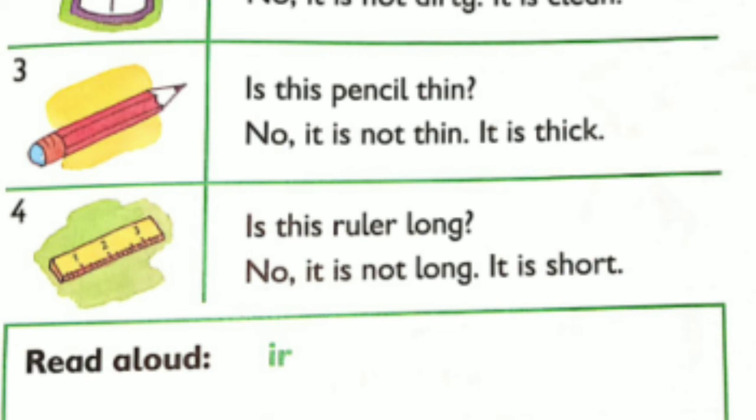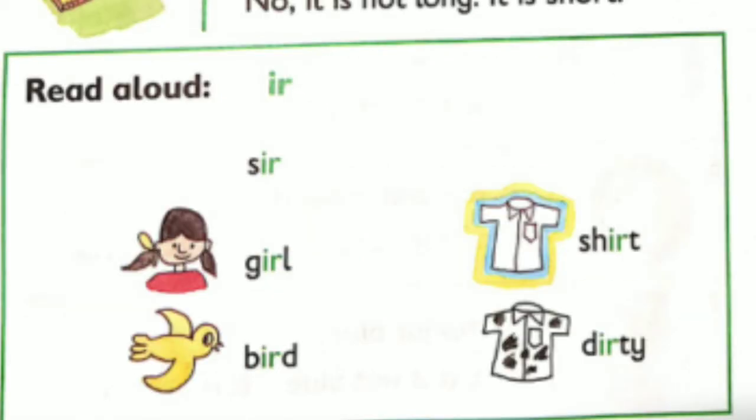Read aloud: IR — sir, girl, bird, sure, dirty.